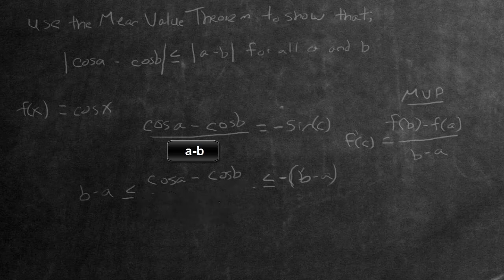So now that we have this, the very last step is just to take the absolute value of everything. And if we were to do that, we noticed that we have a negative b subtract a over here and a positive b subtract a over there. That's equivalent to just the absolute value of b subtract a. And that's going to be less than or equal to the absolute value of this in order to mimic the question. So it'll be cosine a subtract cosine b.